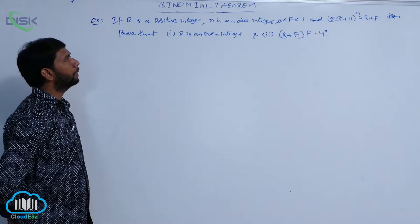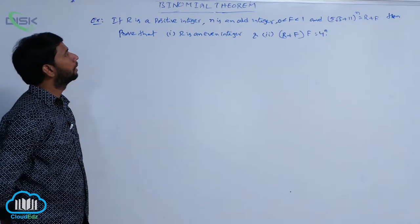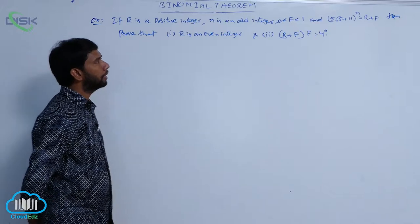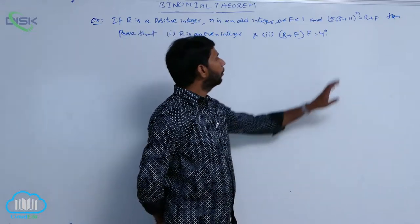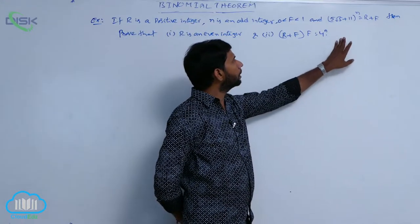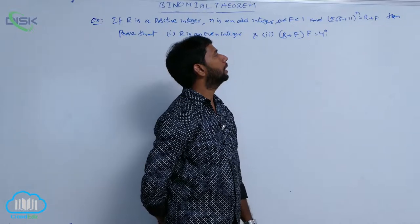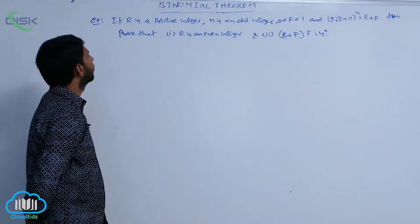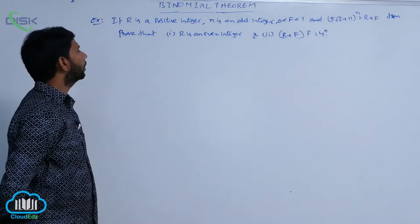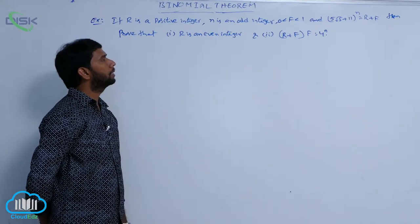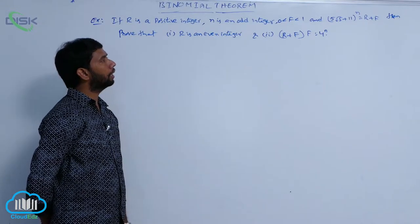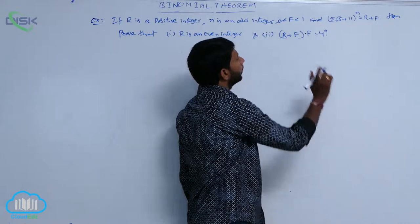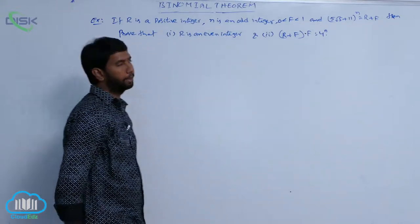Next problem: if R is a positive integer, n is an odd integer, 0 < F < 1, and (5√5 + 11)^n = R + F, then prove that R is an even integer. Second part: prove that (R + F) · F = 4^n.